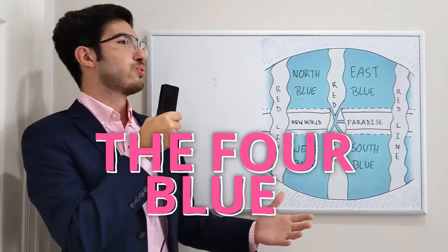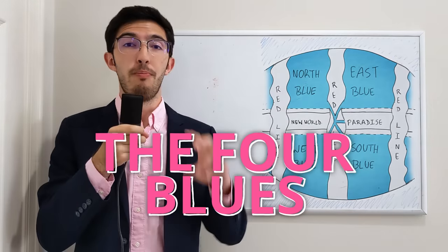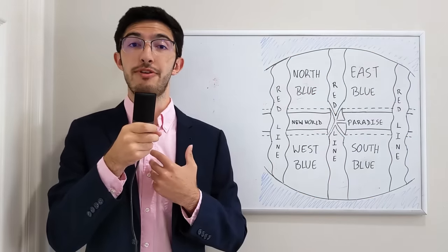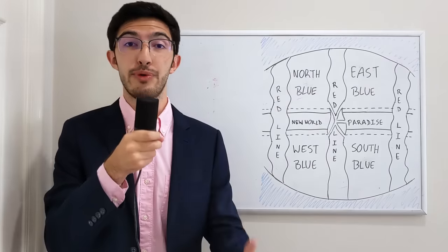So, first of all, we have the four blues, which are probably the most normal part of the world of One Piece and the most relatable to our own world in terms of its geographic and physical characteristics.